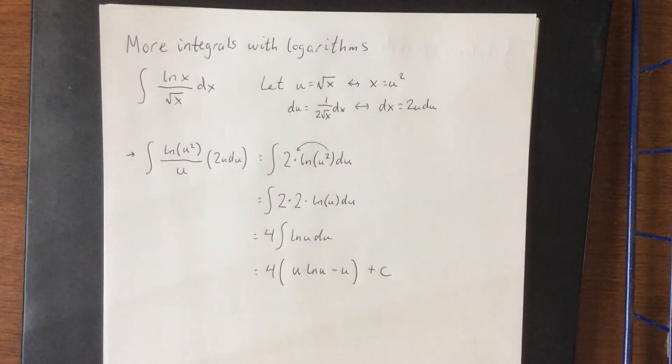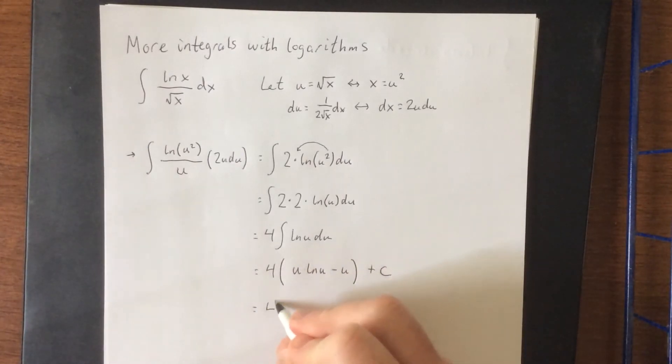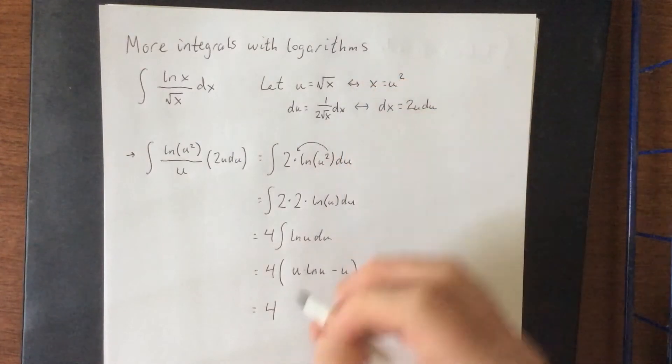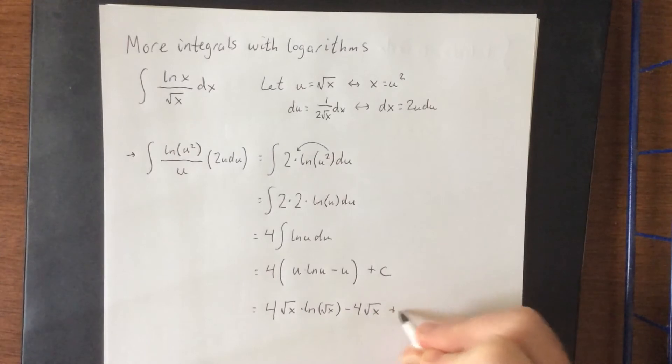Now of course we should substitute back. And let's go ahead and distribute this 4 through as well. So 4 times u, square root of x, times the natural log of u. u again is the square root of x, minus 4 times u, which is the square root of x.